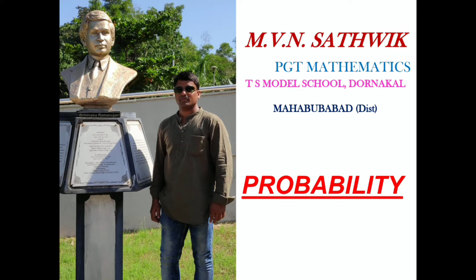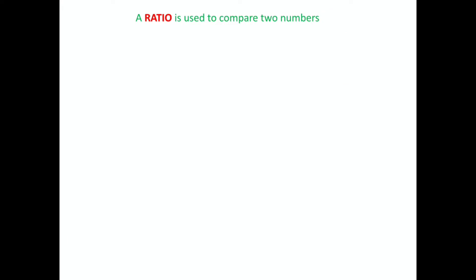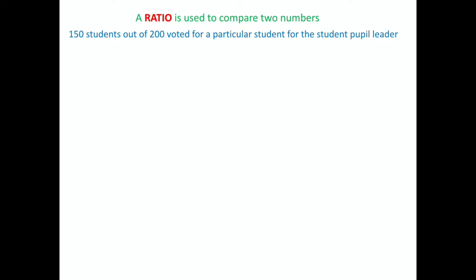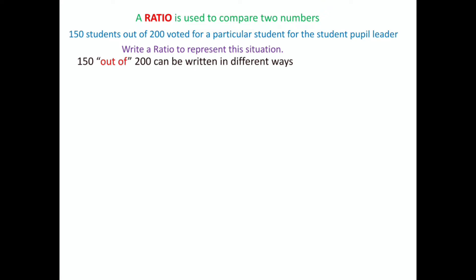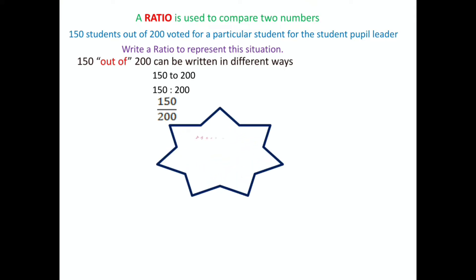As a reminder, in your previous classes, you learned Ratio. What is Ratio? What is it used for? Ratio is used to compare two numbers. For instance, in your school, 150 students out of 200 voted for a particular student for the student pupil leader. Write a ratio to represent this situation. 150 out of 200 can be written in different ways: 150 to 200, or 150 over 200. All these ratios mean the same thing.